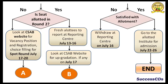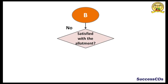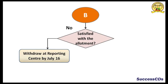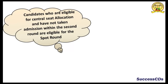And your process ends here. Now candidate B, who got their seat allotted in Round 1 — are they satisfied with the allotment? If no, the last date of withdrawal by the provisionally admitted candidates is July 16th till 4 pm. Withdrawals can be done only at reporting centers. And if you are satisfied with your seat allotment, go to the allotted institutes for admission between 22nd of July to 26th of July. And the candidates who did not get their seat allotted in the 2nd round are also eligible for spot round.